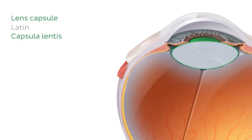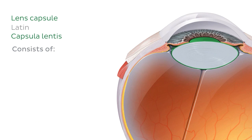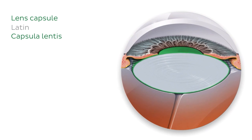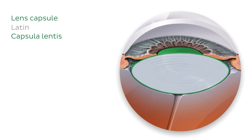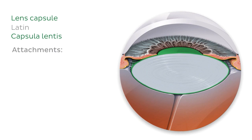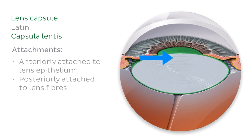The lens capsule is made up of various classes of collagen — types one, three, and four — which gives the lens its elastic quality, playing a central role in accommodation. It is also made up of a wide range of glycosaminoglycans and glycoproteins. The capsule thickness depends on position and age. It's worth noting that the lens capsule is mainly derived from the epithelial cells of the anterior lens. Anteriorly, the capsule is attached to the lens epithelium; posteriorly, it is attached to the lens fibres.